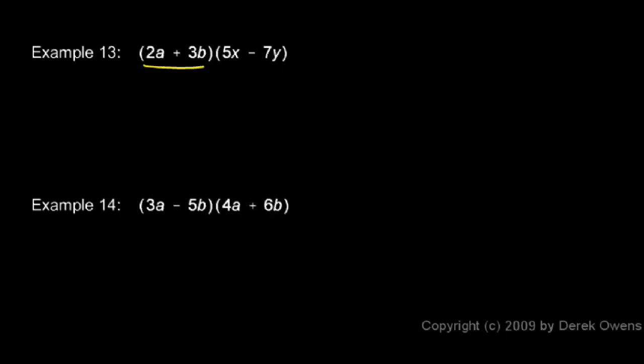Example 13: 2a plus 3b times 5x minus 7y. We'll do a FOIL here. First, outer, inner, last.